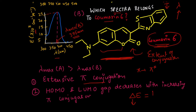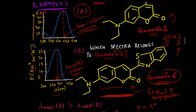Since ΔE = hc/λ and the numerator hc is constant, ΔE is inversely related to wavelength. With extensive pi conjugation, the energy difference lowers, meaning lambda max is higher. Coumarin 6 has extensive conjugation, so the spectrum with the maximum lambda max corresponds to that species.